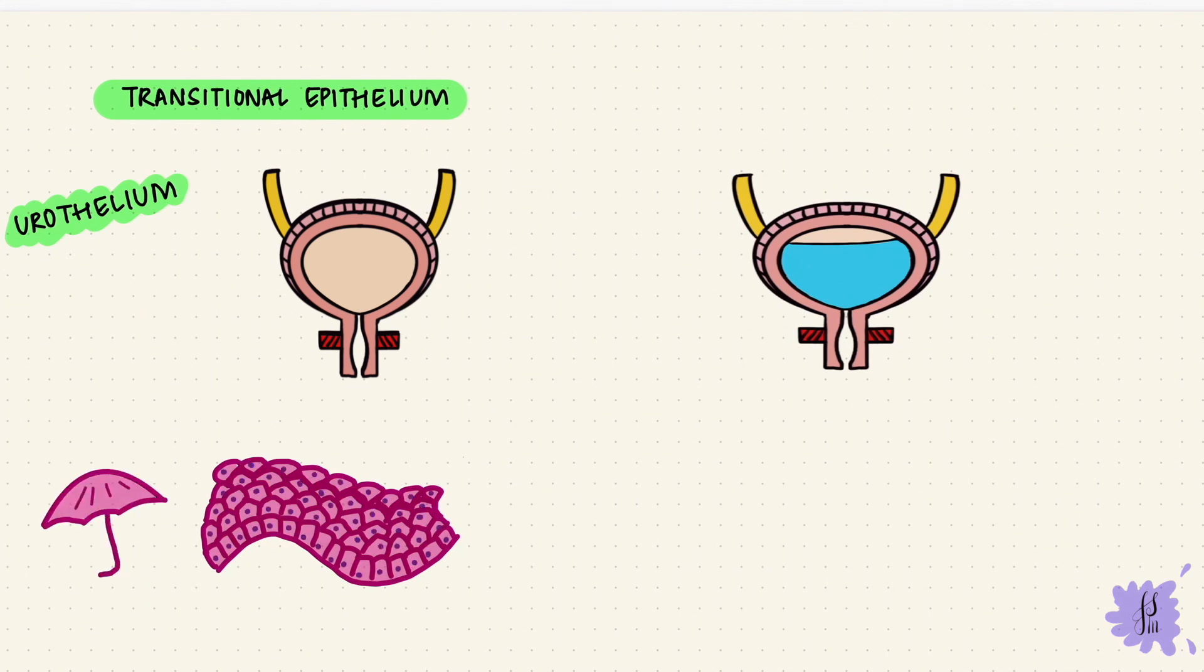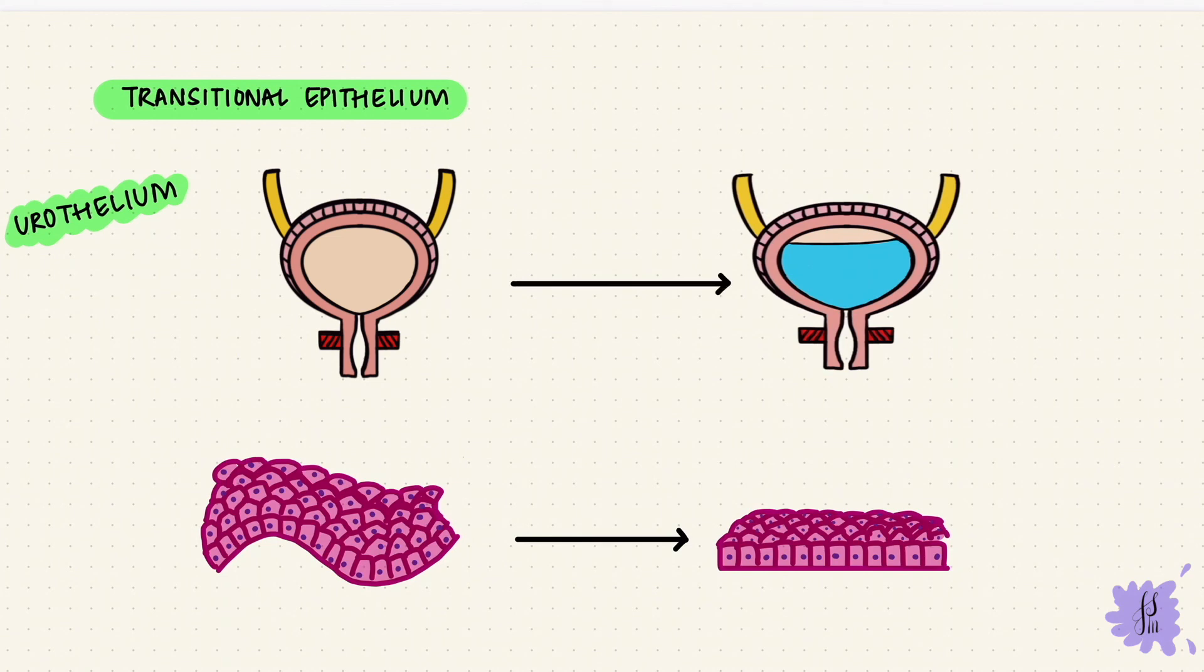But when the bladder fills and it stretches, this epithelium becomes flatter. It doesn't look as stratified now. So it changes its appearance when the bladder stretches and when it contracts. This is transitional epithelium.